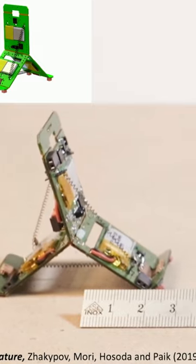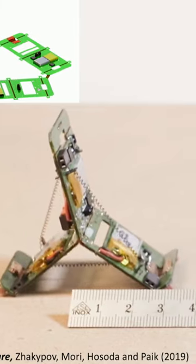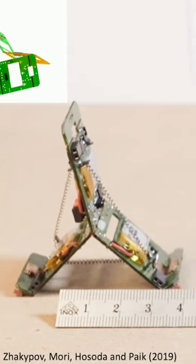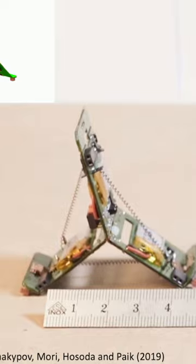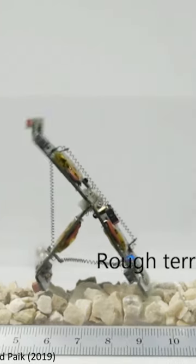This one actually navigates through different terrains autonomously. So when it's a dry and flat land, it crawls. And if it meets a rough terrain, it starts rolling.